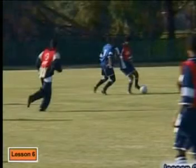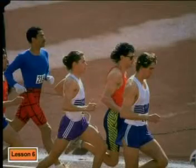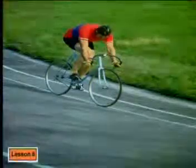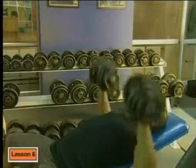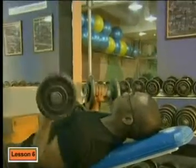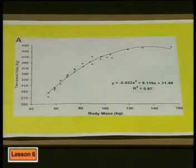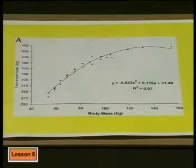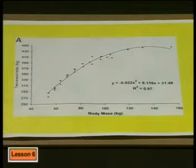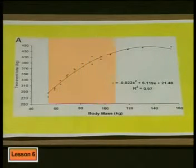Let's look at another scatter plot. Whether it's soccer, rugby, swimming, or athletics, people are always trying to find out how to improve their performance. Researchers in sport compare different variables to see what affects performance. An experiment was carried out to compare the body mass of weightlifters to the amount of weight they can lift. What do you notice about the trend? The relationship is not linear. This curve suggests that in general, the heavier a person is, the more weight they can lift — but only up to a certain point on the graph.